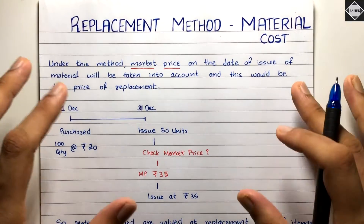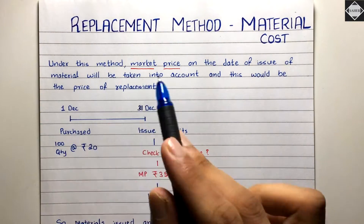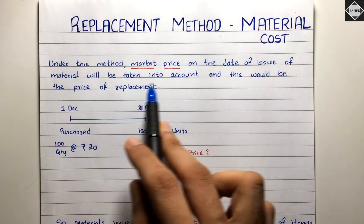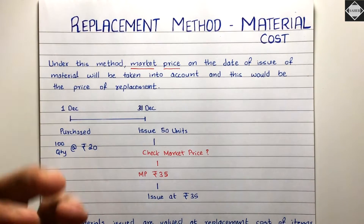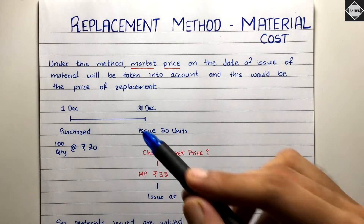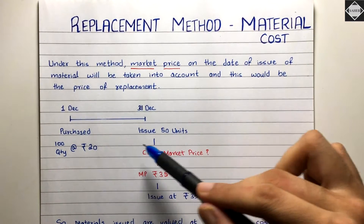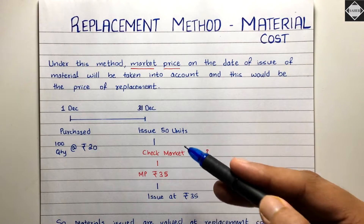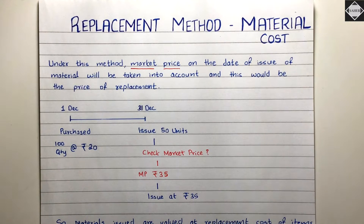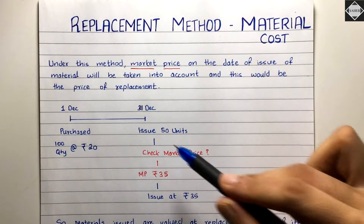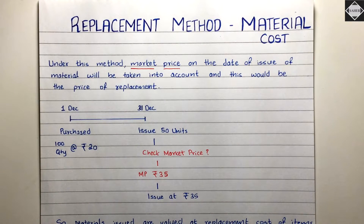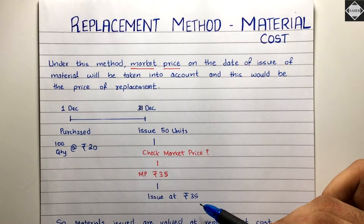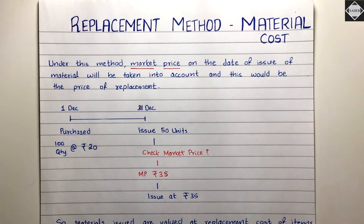The concept of this method is very simple. Under this method, the market price on the date of issue of material will be taken into account. For example, let's say on 1st December you purchased 100 units at rupees 20. This is the receipt that came into your warehouse. Then on 31st December, the production department asks for 50 units. The replacement method says you must immediately check the market price of those materials — say it's rupees 35 — and you issue at rupees 35.